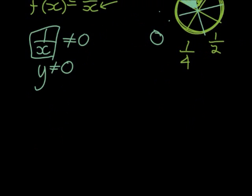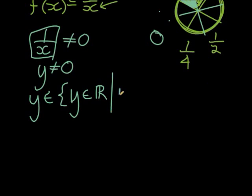So I can write this. Let's write it in a set notation. So y can be an element of any real number. So y is an element of any real number, given that y is not equal to zero.